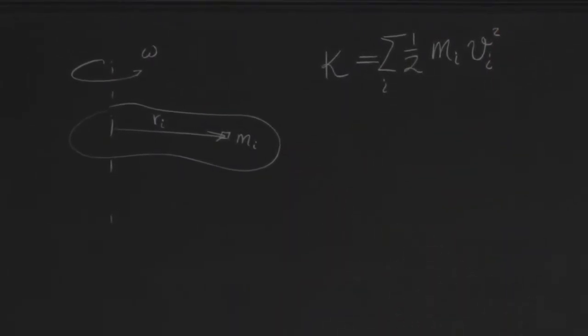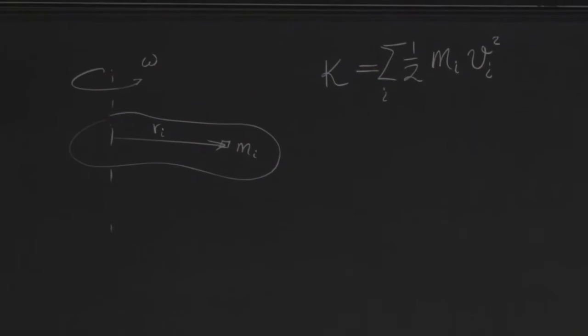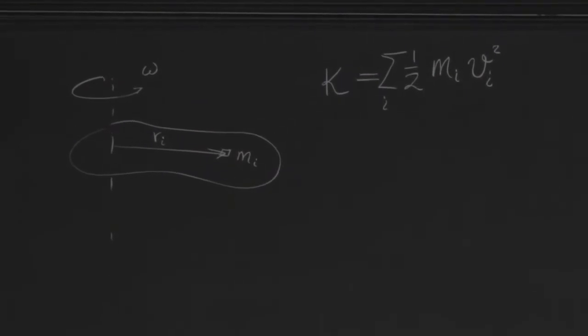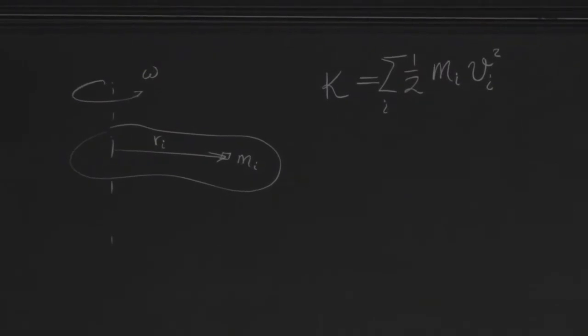You should be able to express the speed with which any little mass point is moving using r sub i and omega. And that should allow you to express the kinetic energy of the whole.